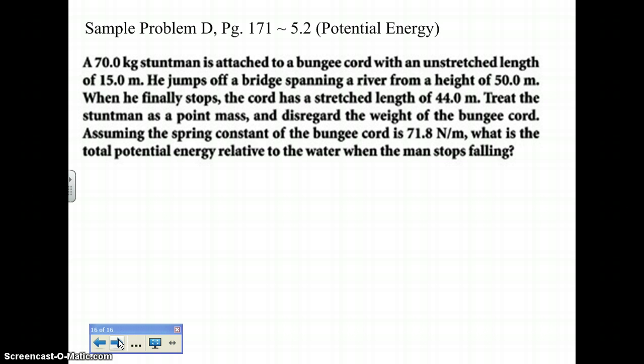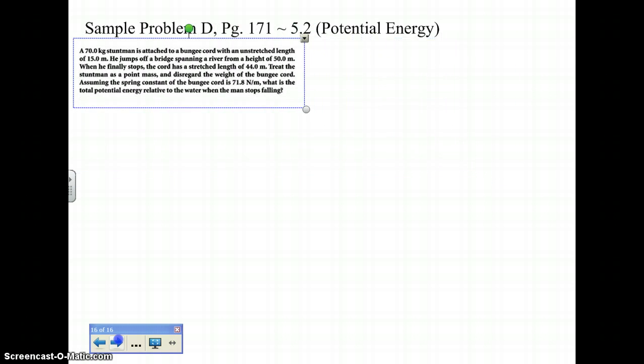Now I do need to make this question a little bit smaller so I can fit all this work on here. What this question is saying is a stuntman is attached to a bungee cord with an unstretched length of 15.0 meters. And he's going to jump off a bridge at 50.0 meters. When he finally stops, the cord has a stretched length of 44.0 meters. The stuntman has a point mass, so disregard the weight of the bungee cord and assume the spring constant of the bungee cord is 71.8 newtons per meter. So what is the total potential energy relative to the water and the man before he stops?